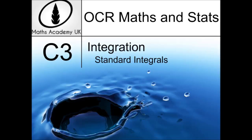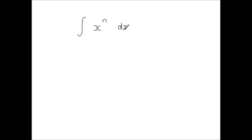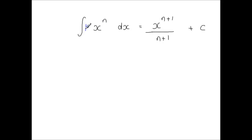Standard C3 integrals. When we integrate x to the power of n, we get x to the power of n plus 1 — so you increase the power by 1 and divide by the new power, plus some constant of integration. And if x to the power of n was multiplied by some constant k, then that constant just multiplies through. You can write it before or after, and it doesn't change anything.